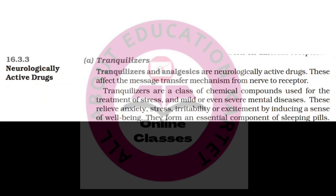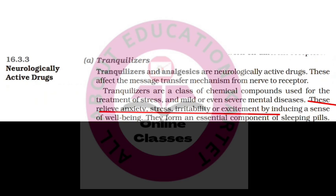Neurologically active drugs include tranquilizers and analgesics. Tranquilizers are a class of chemical compounds used for the treatment of stress and mild or severe mental diseases. They relieve anxiety, stress, irritability, or excitement by inducing a sense of well-being. They form an essential component of sleeping pills.